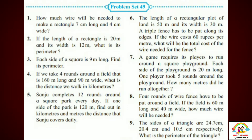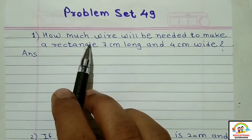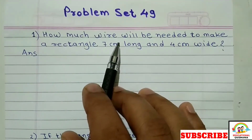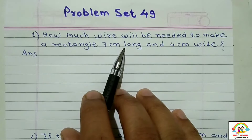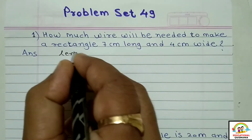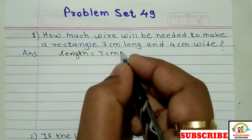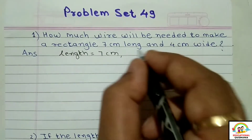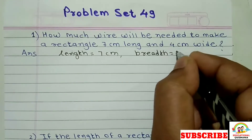Question number one: How much wire will be needed to make a rectangle 7 centimeter long and 4 centimeter wide? That is, 7 centimeter lambi and 4 centimeter rundi — to make a rectangle, how long a wire will be needed? Let's write the given information first. Length is 7 centimeter, wide means breadth — breadth means rundi.